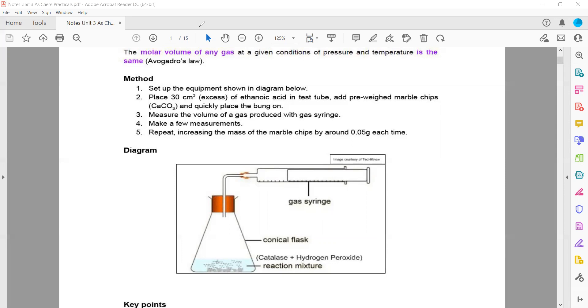Place 30 cm³ of ethanoic acid in the test tube. Add marble chips (CaCO₃) and quickly place a bung. You can also use hydrogen peroxide, which decomposes into water and oxygen. Any reaction that emits gas can be used to determine molar volume.